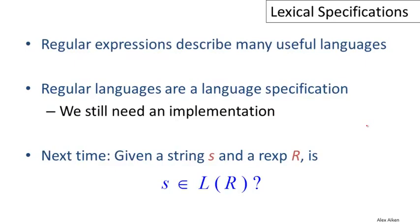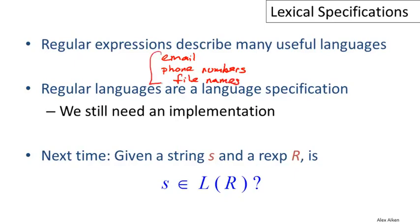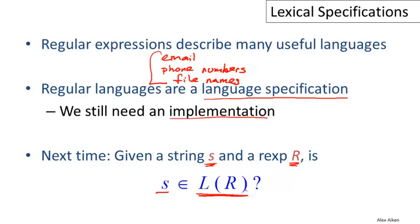To wrap up, I hope I've convinced you that regular expressions can describe many useful languages. We've seen fragments from programming languages, and also that email addresses can be specified this way. Other examples of regular languages include phone numbers and file names. There are many examples in everyday life where regular languages describe simple sets of strings. I also want to emphasize that so far we've used regular expressions only as a language specification — to define the set of strings we're interested in. We haven't said anything about how to actually implement lexical analysis. We still need an implementation, and we'll talk about that in future videos: given a string S and a regular expression R, how do we know whether that string is in the language denoted by the regular expression?